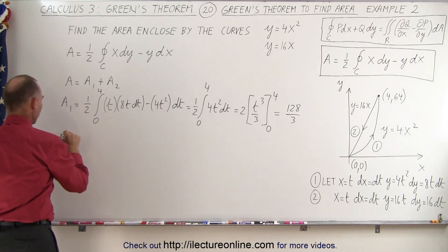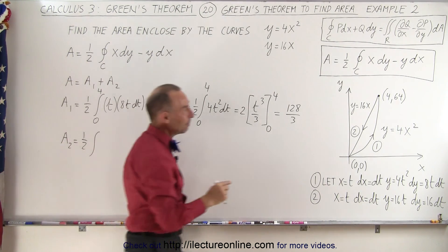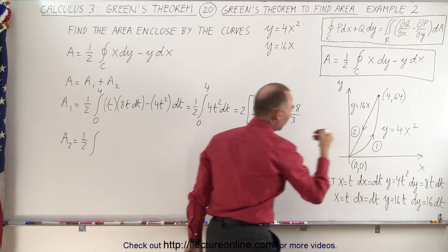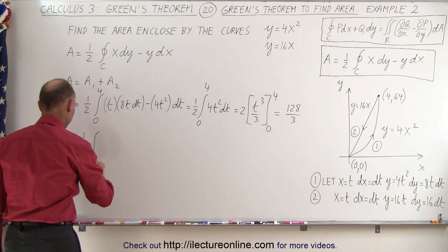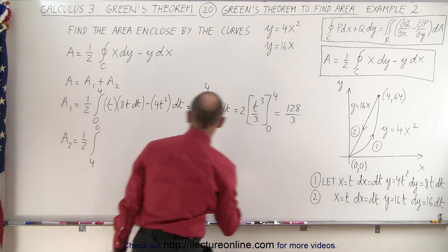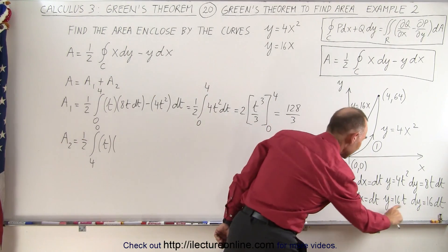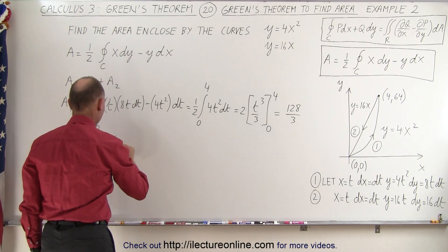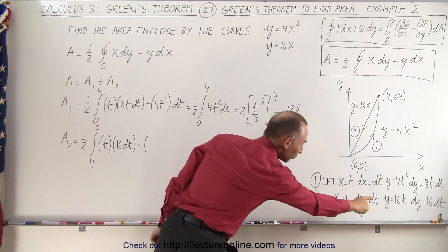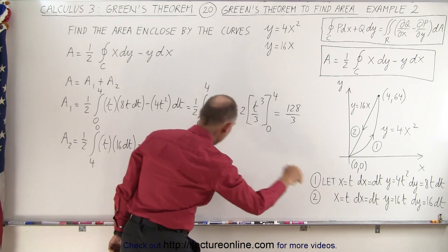And now we find a2. Now a2 is going to be one-half times the integral, but now we're coming back from here to here. t limits, same as x limits, are going to be from four to zero. And x times dy, x is equal to t. And dy is going to be 16 dt. Minus y for the second curve is 16t, and dx is going to be dt.